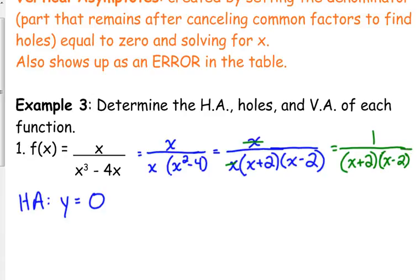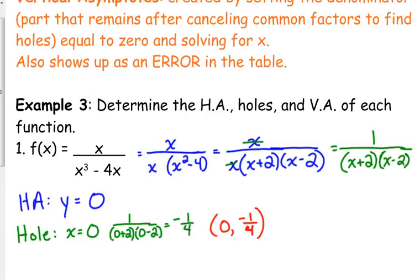So our hole is our simplified version. We canceled an x, we set that equal to 0. Our hole is at 0. When we plug that into our simplified version, 1 over 0 plus 2 times 0 minus 2, that gives us negative 1 fourth. So our hole is the point 0, negative 1 fourth.